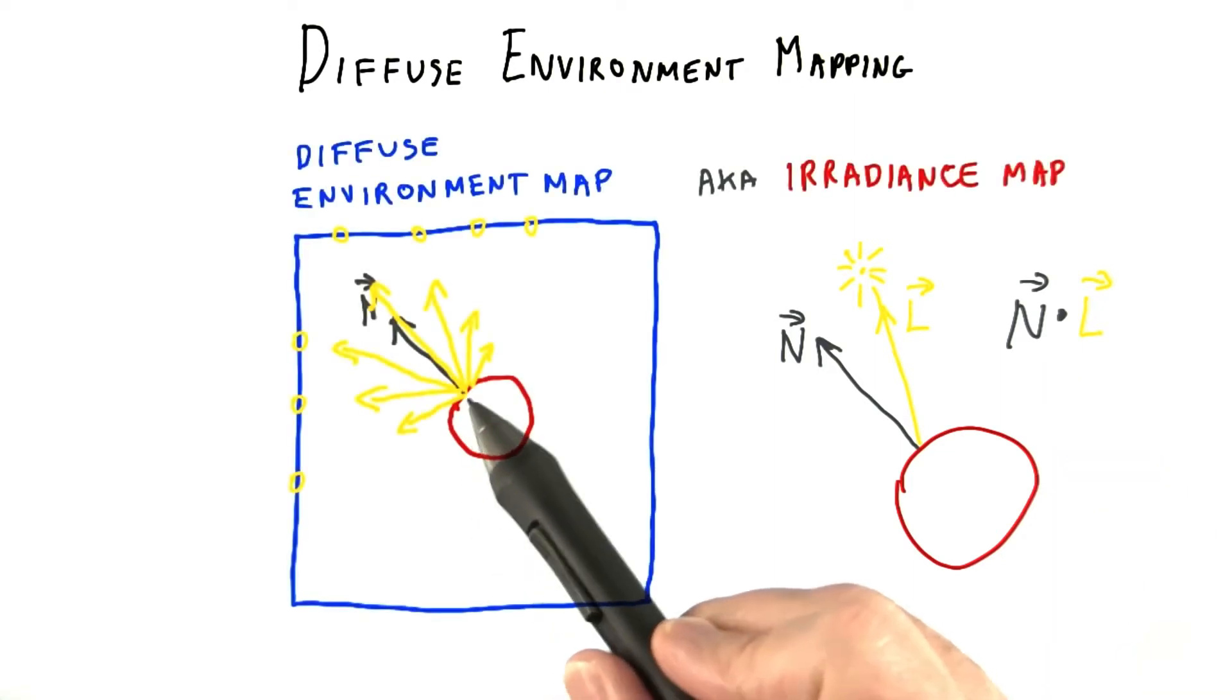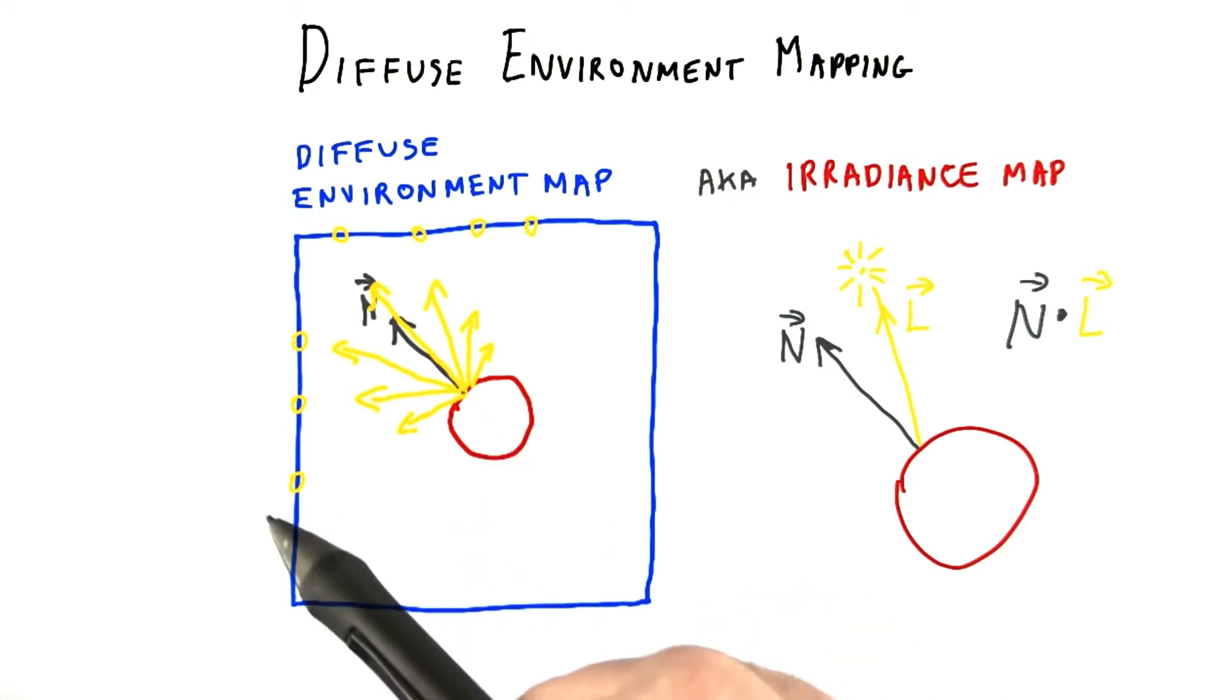Now think big. For a particular point on a surface, consider every texel in our environment map as a source of light, emitted or reflected.